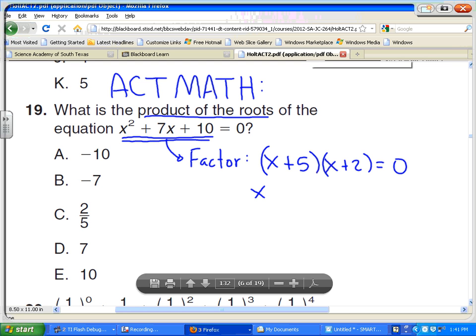And if we set each of the factors equal to 0, then you're going to have that x equals negative 5 and x equals negative 2. So the product then would be negative 5 times negative 2, which is 10.